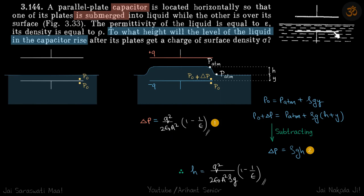Now we apply this to a problem: the bottom plate is submerged in water and the top plate is outside the water. We are asked at what height h the liquid level inside the capacitor will rise after the plates acquire a surface charge density sigma. We have already calculated the excess pressure inside as delta_p = q²/(2ε₀A²) · (1 − 1/ε). We need to find the excess height h.